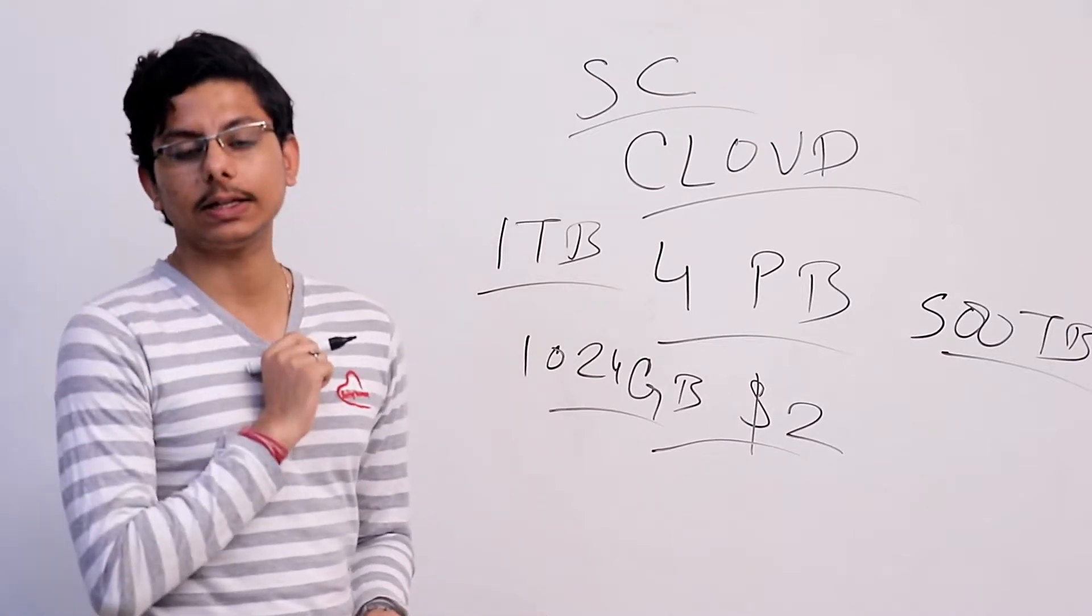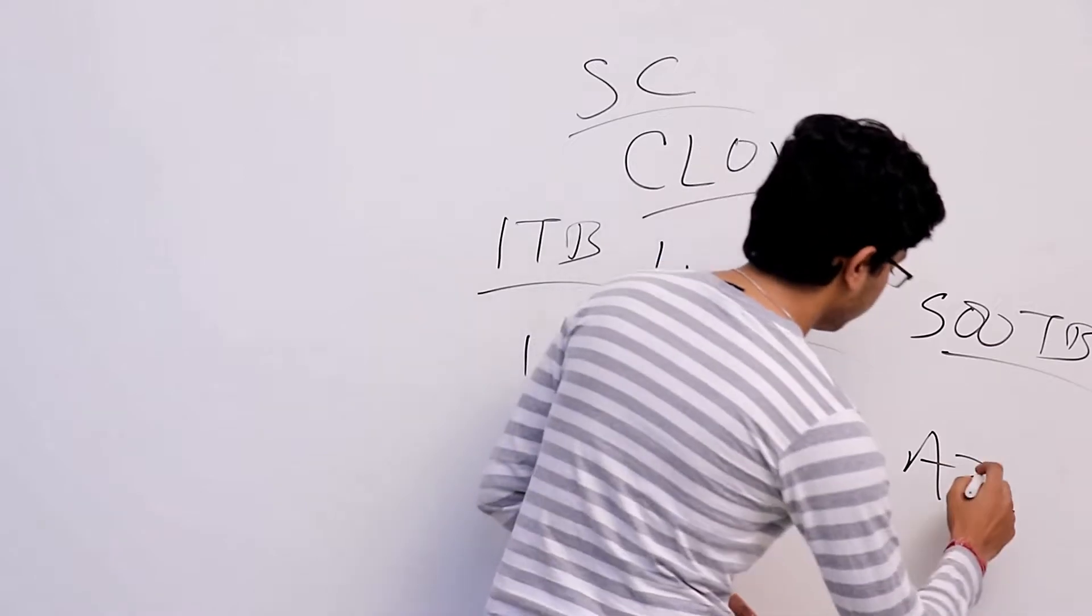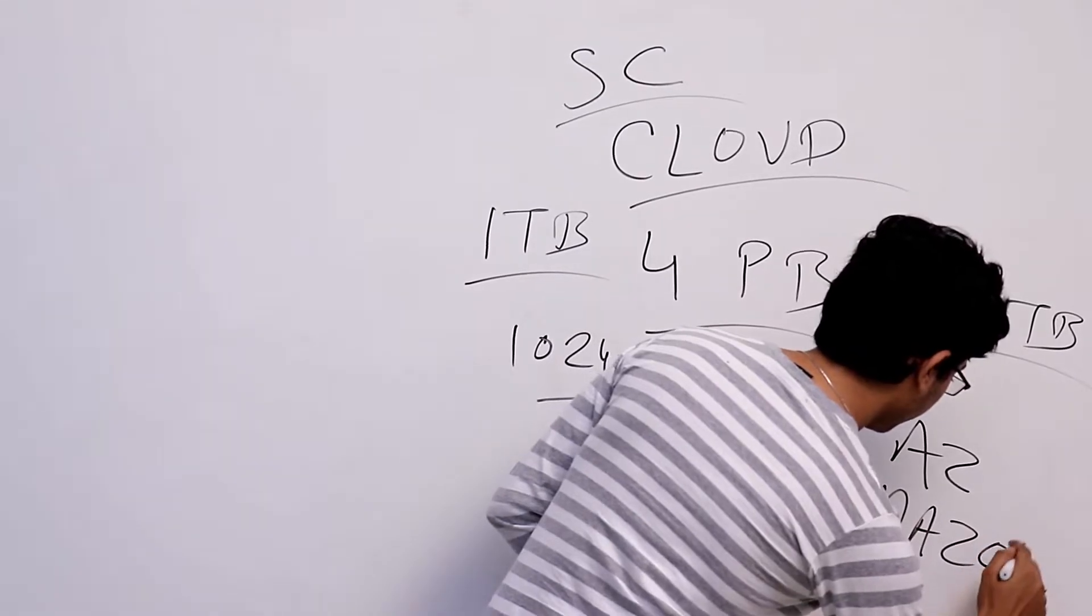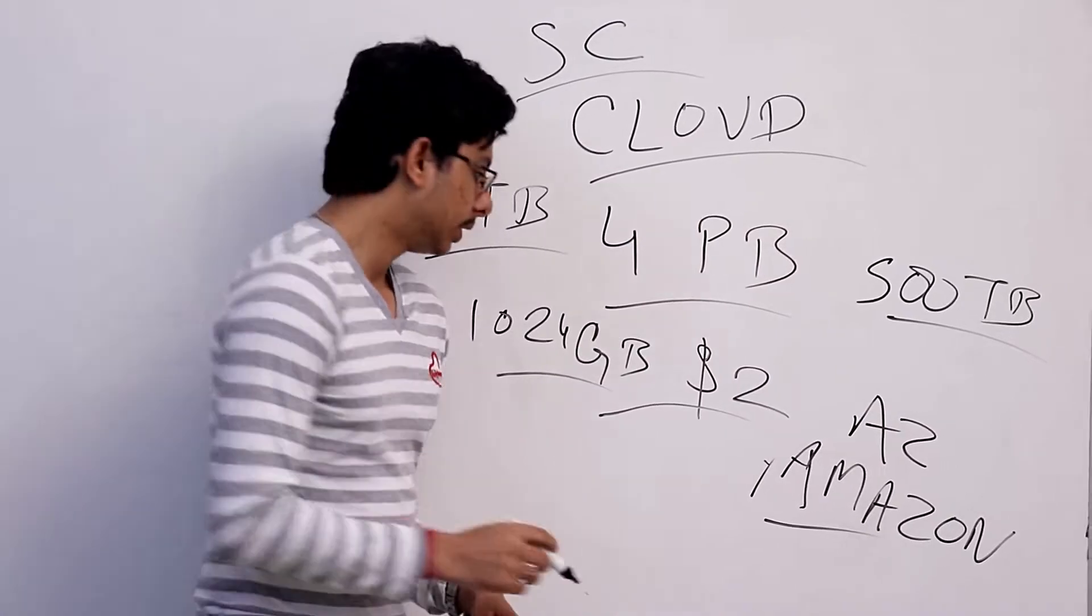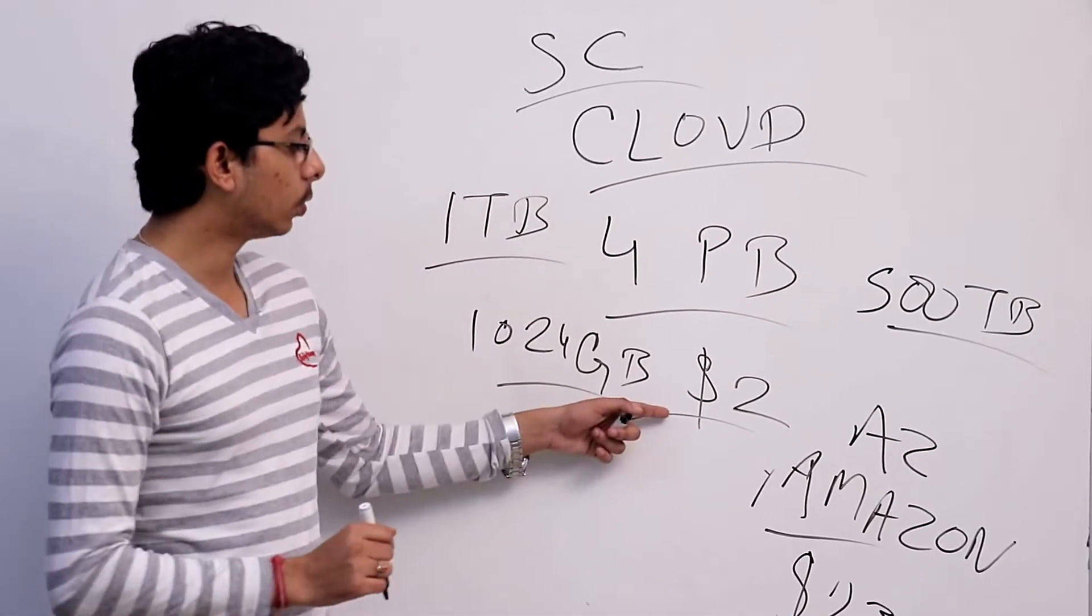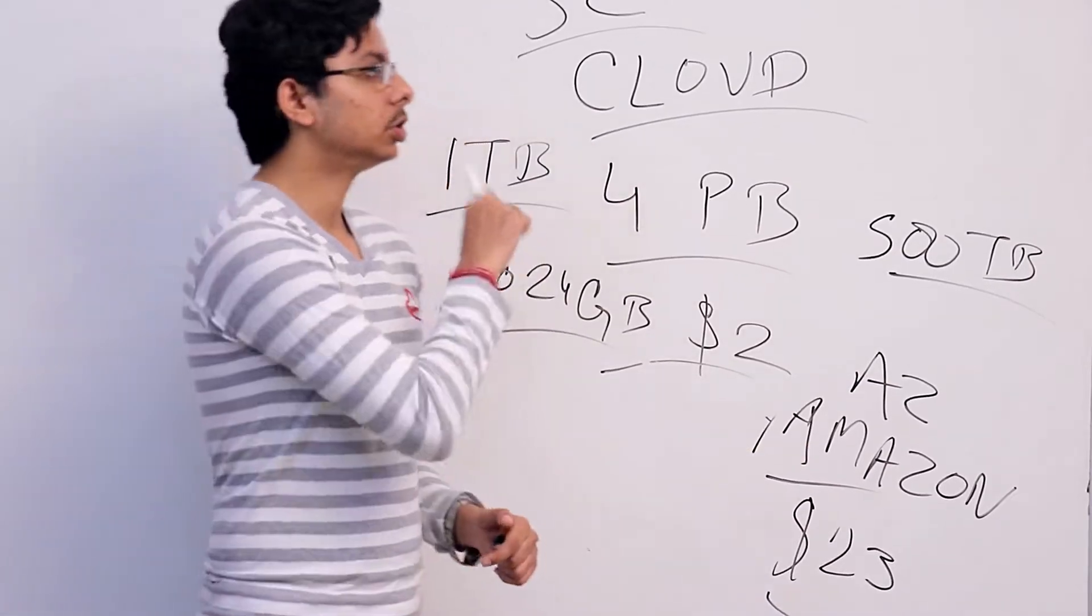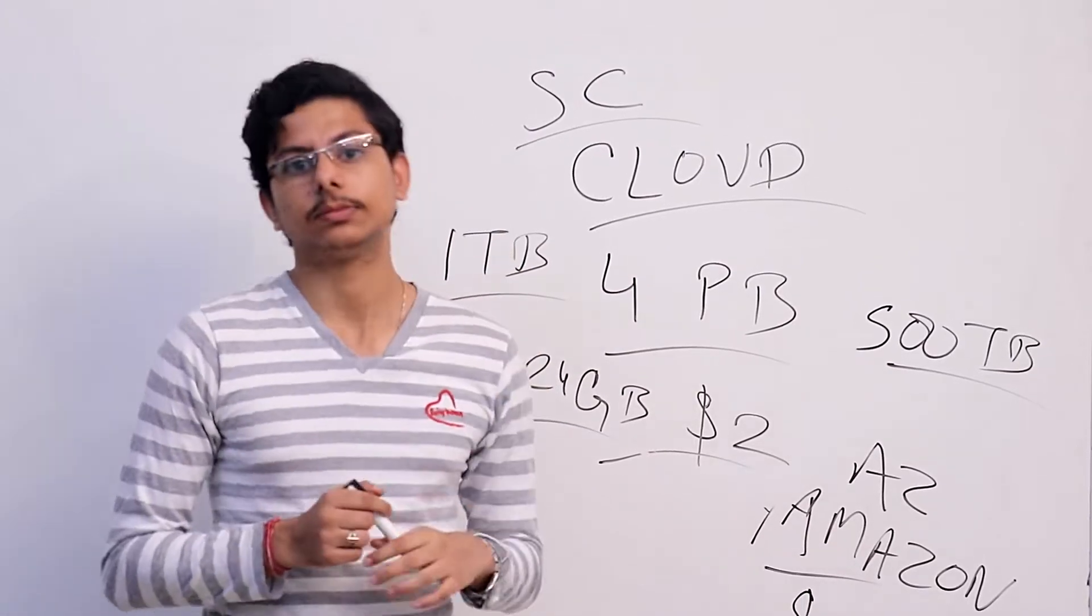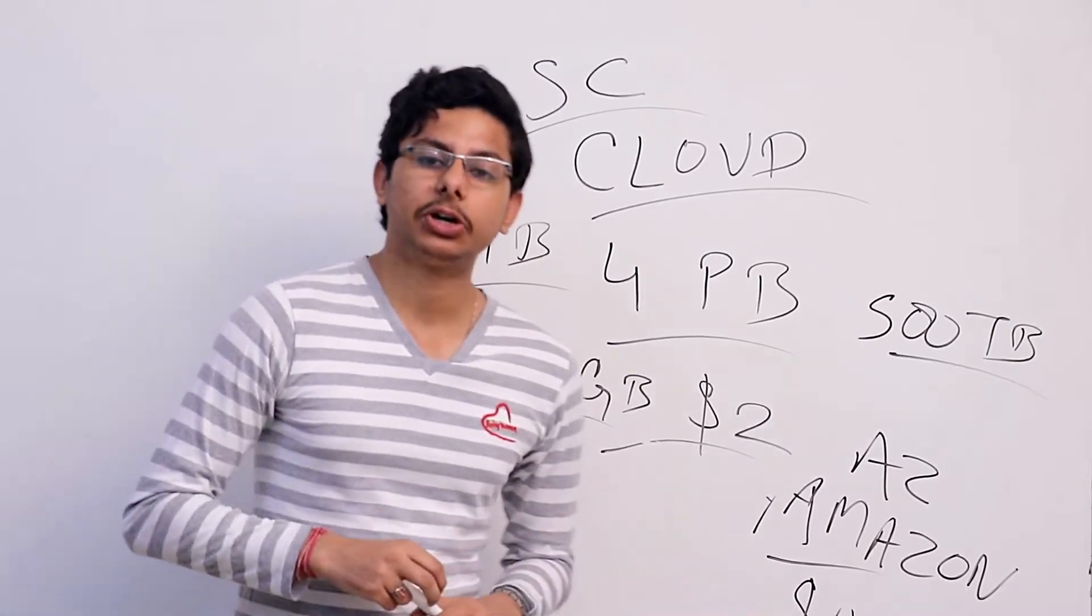It costs only $2, which is very less. If we compare this to Amazon cloud storage, Amazon charges around $23 per month. This is the main factor which makes this coin great—its storage cost is very, very less in comparison to other competitors.